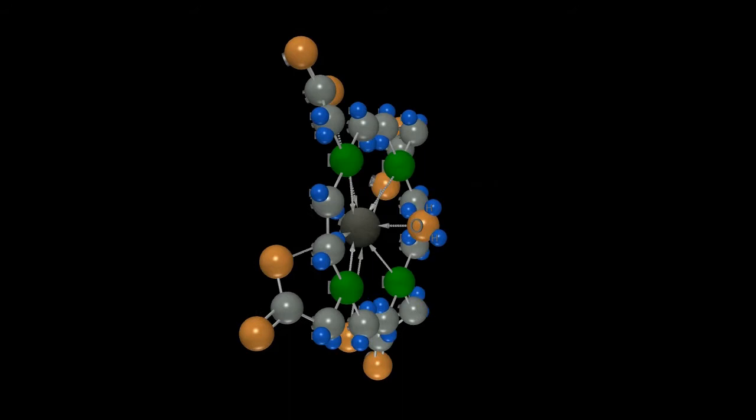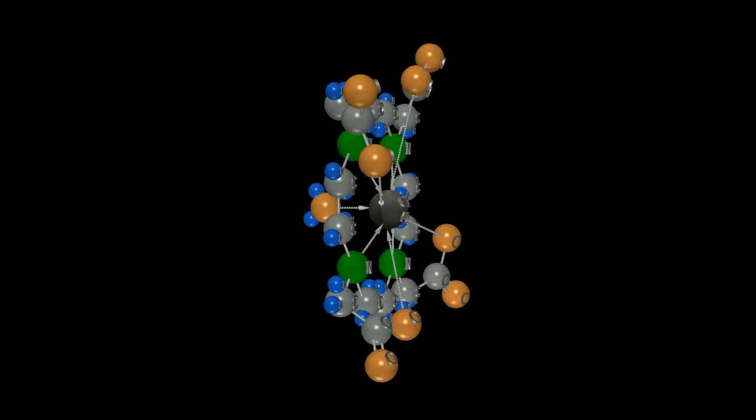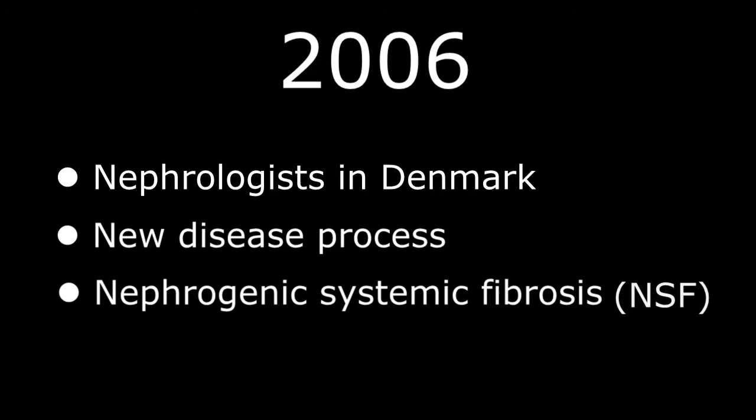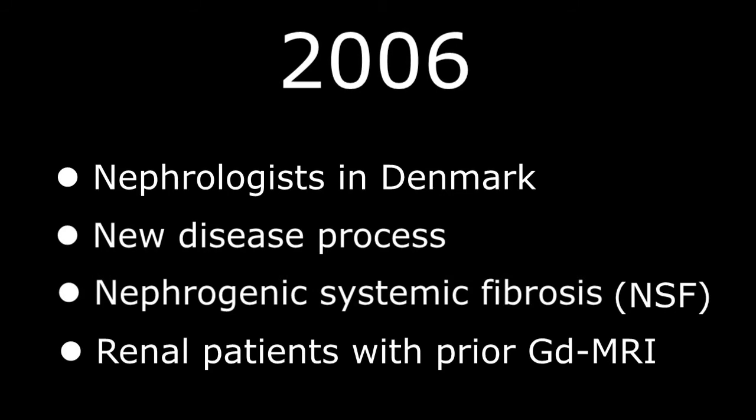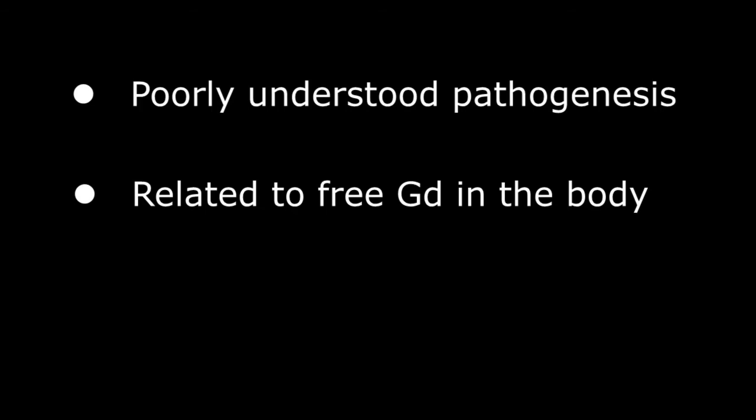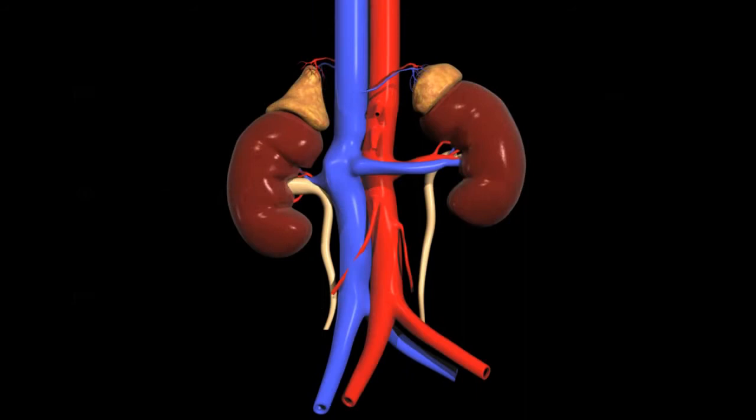In 2006 nephrologists in Denmark identified a new disease process now referred to as nephrogenic systemic fibrosis or NSF in patients with chronic renal insufficiency who had undergone contrast enhanced MRI studies in the past. The disease manifests as a diffuse debilitating tissue fibrosis that in the most severe form can be fatal as critical organs like the heart, lungs and liver become progressively fibrosed and non-functional. The pathogenesis is poorly understood but felt to be related to the free gadolinium deposition in the tissues and this makes sense why it would occur most exclusively in patients with renal insufficiency.